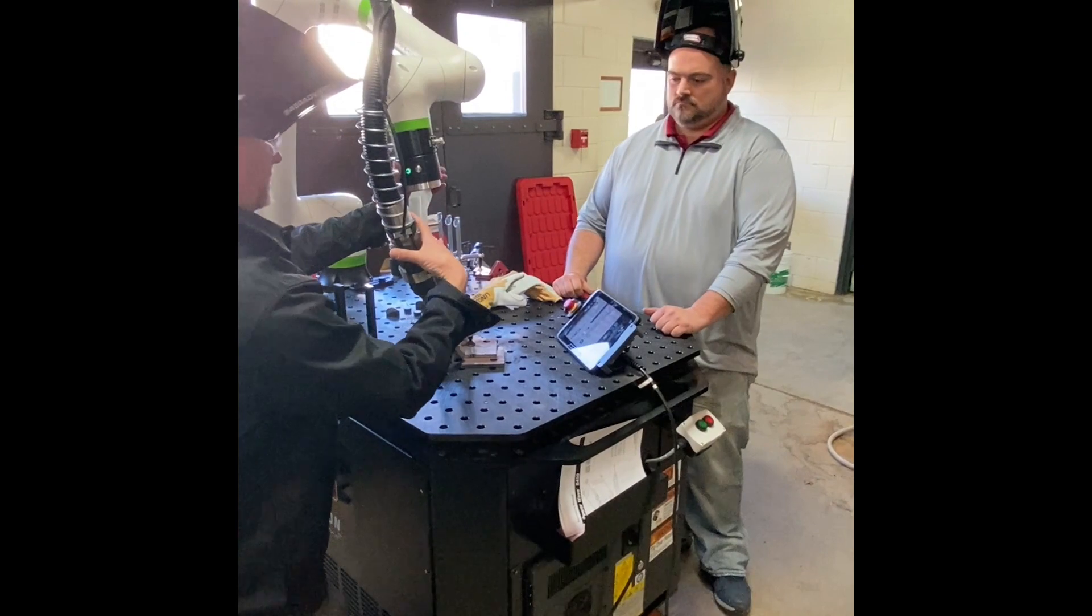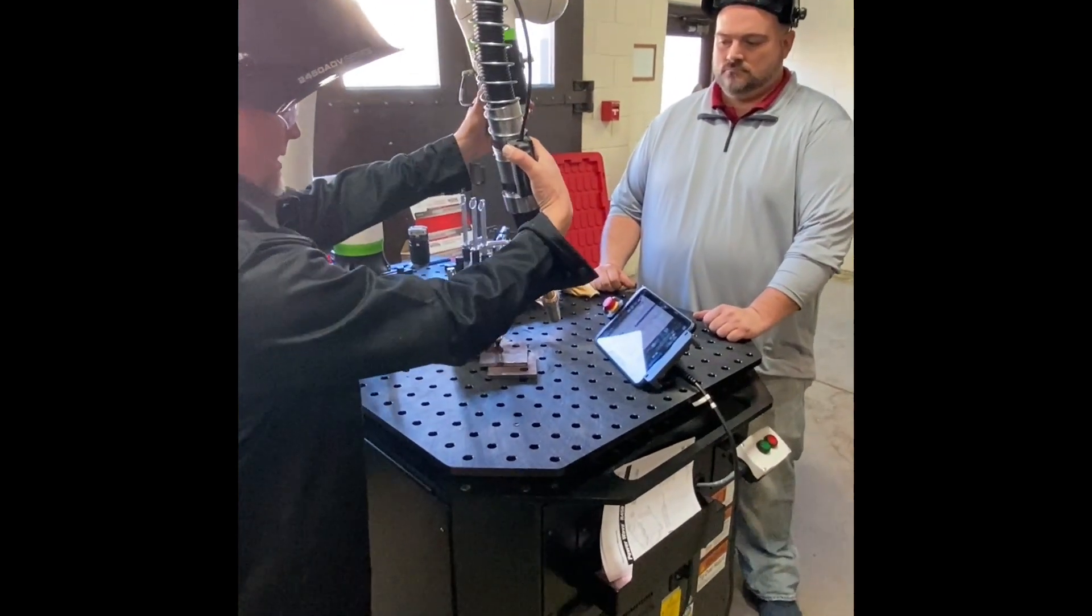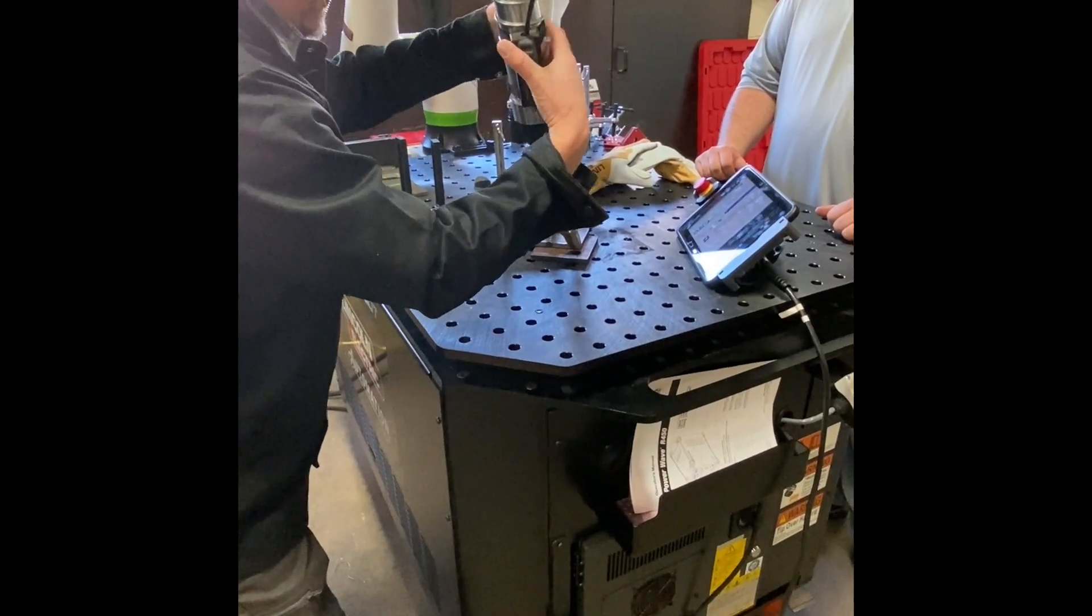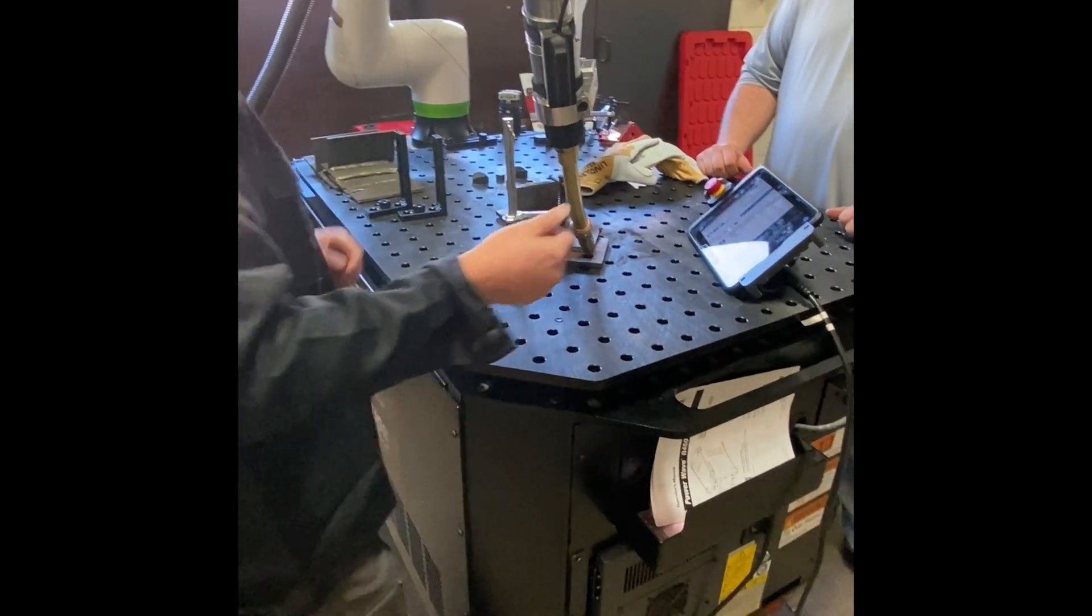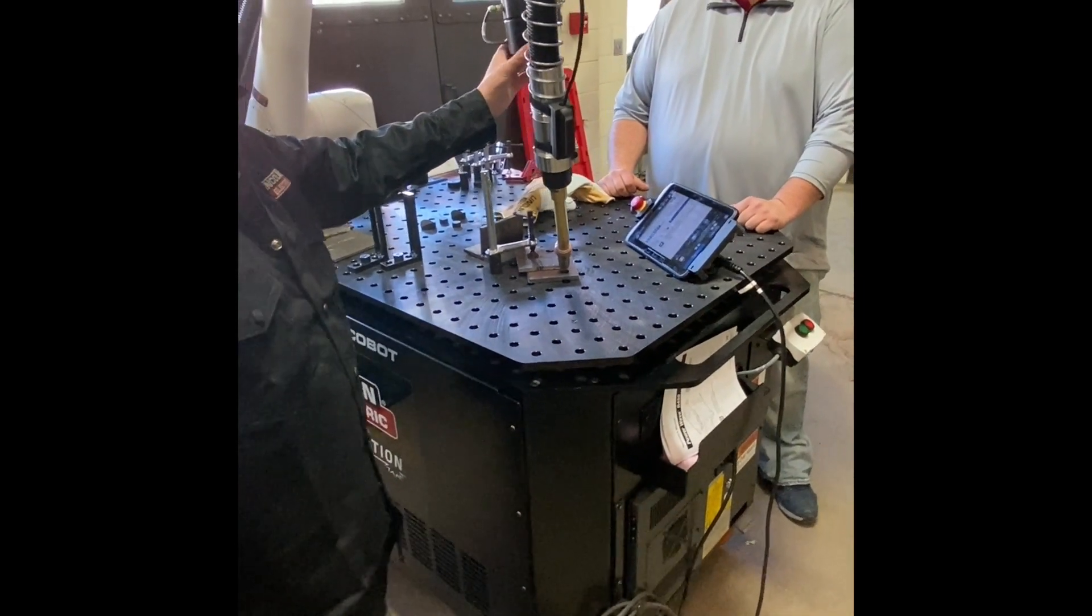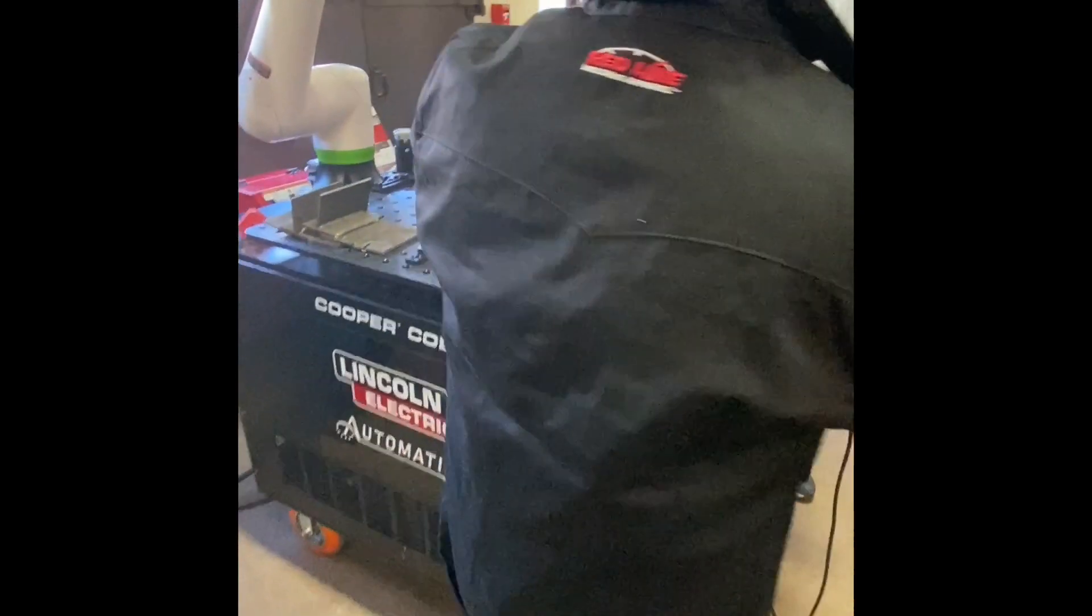Grab the arm again. Take it to our next spot. This is a linear weld. We'll take it to there. Hold this for three seconds again. Weld stop. That simple.